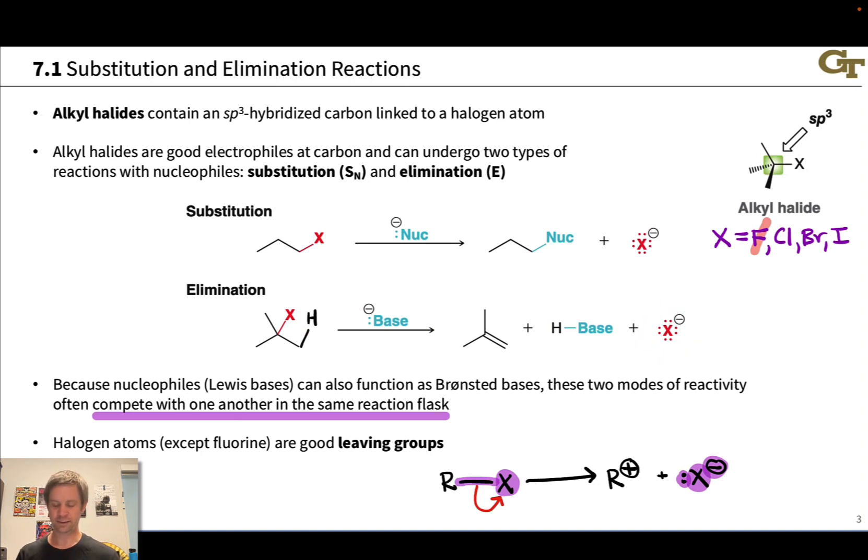In both cases, we see this anionic reagent species donating a pair of electrons. The difference between substitution and elimination really comes down to where that pair of electrons goes. Does it go to carbon with direct displacement of the leaving group? That's a substitution reaction. Or does it go to a beta hydrogen? In which case, we don't directly displace the leaving group, but we lose it with the formation of a new pi bond. That's going to be the focus moving forward in the rest of this unit, on reactions that form pi bonds via elimination, where the reagent acts as a Bronsted base rather than a nucleophile.